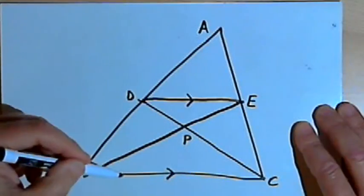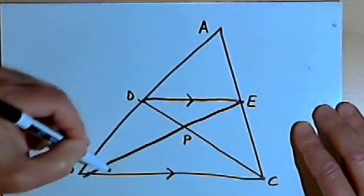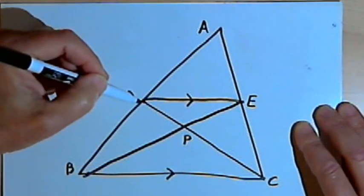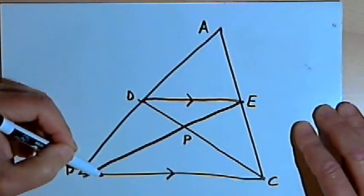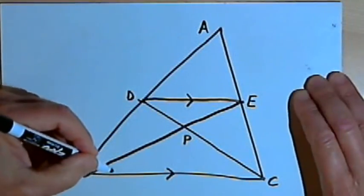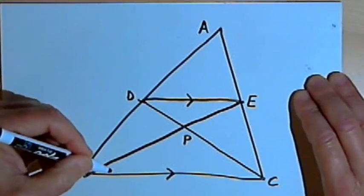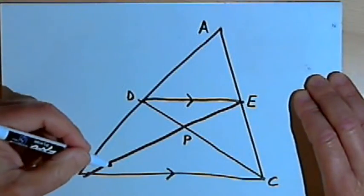and each of these medians is a transversal that cuts through the parallel lines. So if I've got alternate interior angles along a transversal, they're going to be congruent.